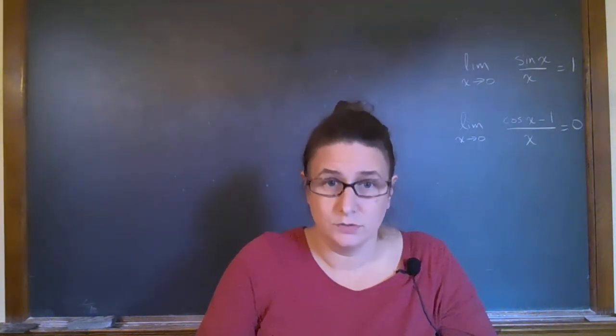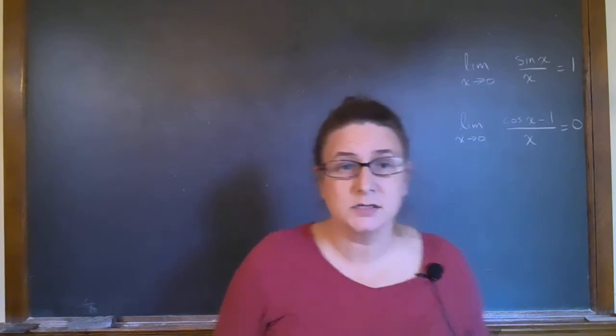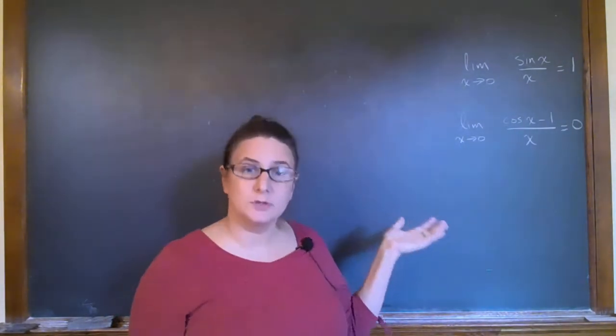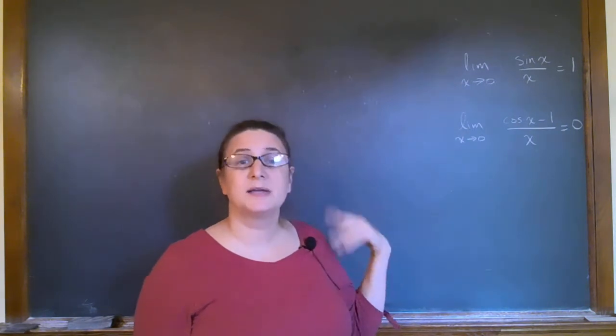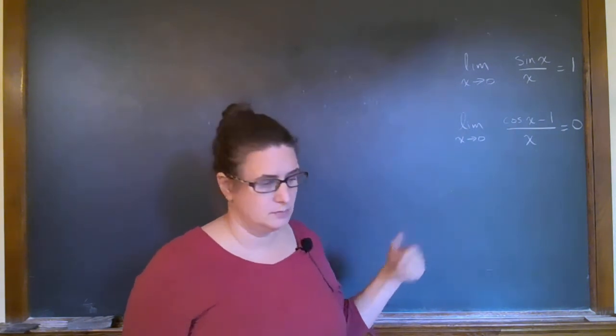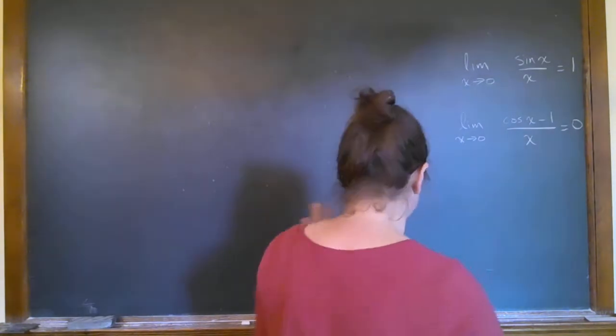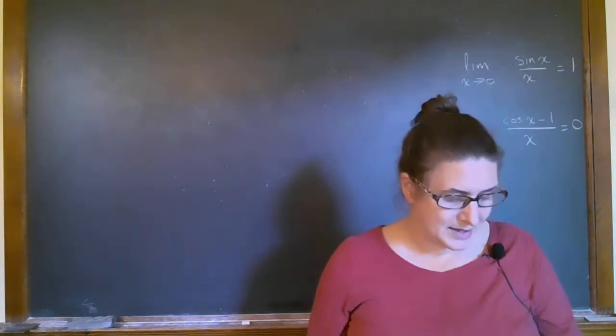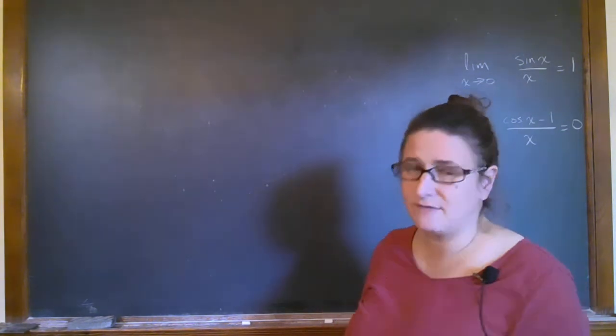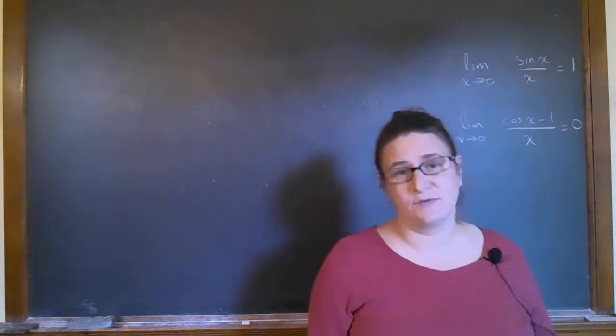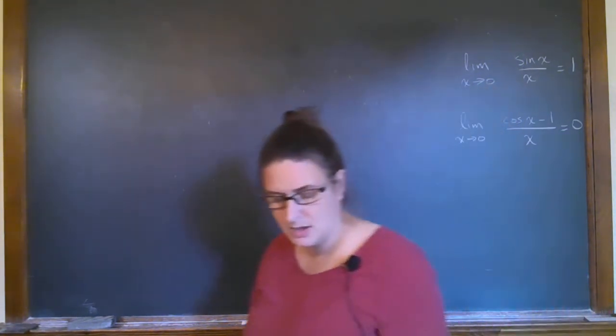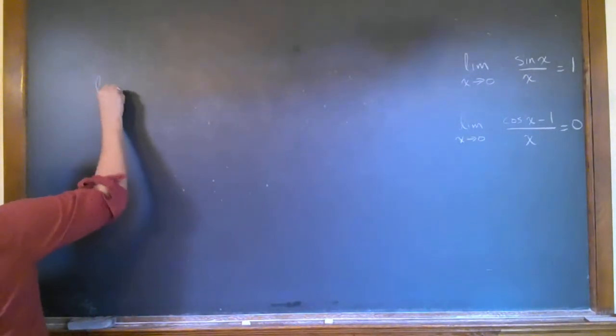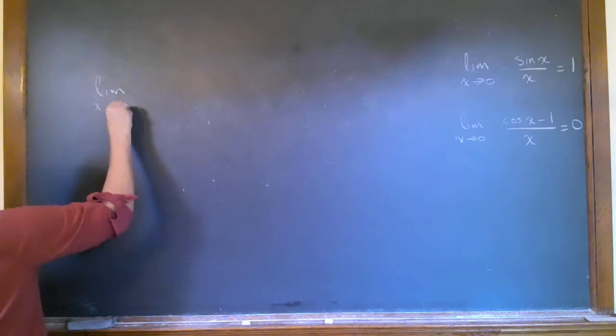One last thing that we have to do is discuss not necessarily the proof of these, but how we can sometimes use these special limits because they do show up. In fact, these problems are pretty easy overall. Oftentimes people get confused because they forget about them. But the idea is that sometimes you see something that looks kind of like these limits.